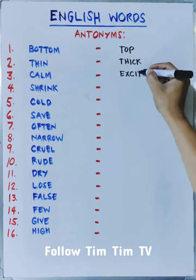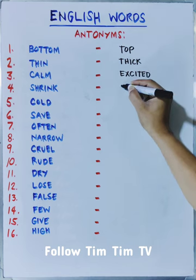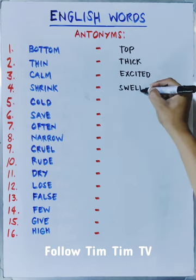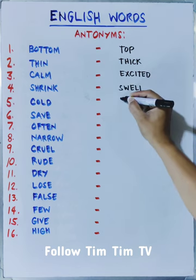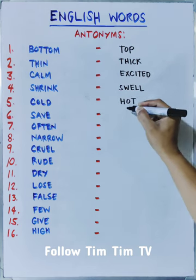Calm is excited. Shrink is swell. Cold is hot.